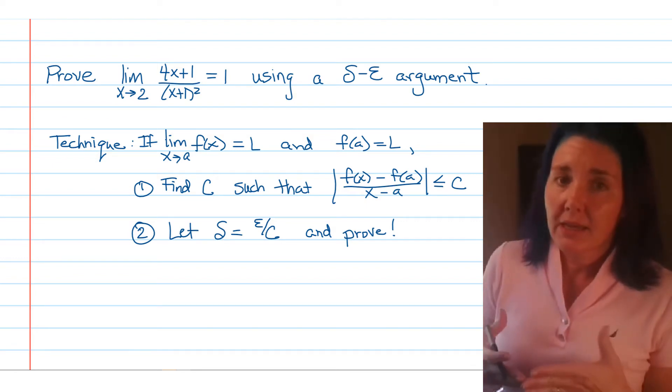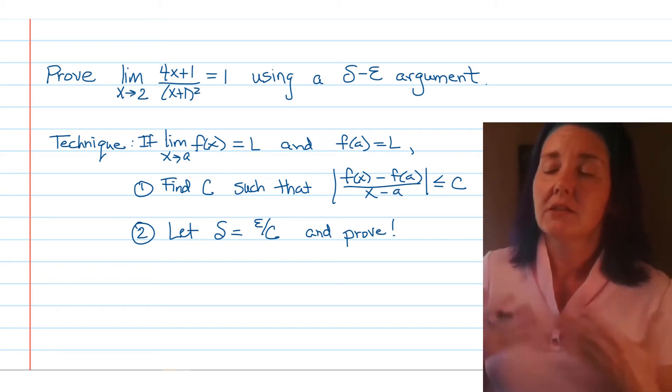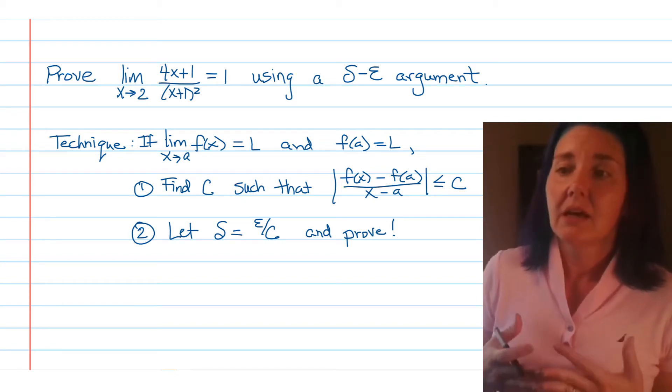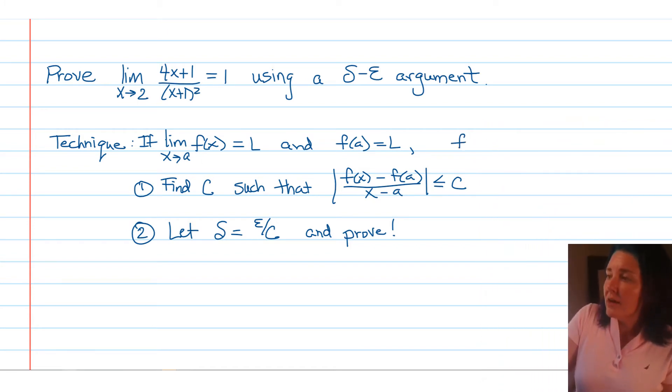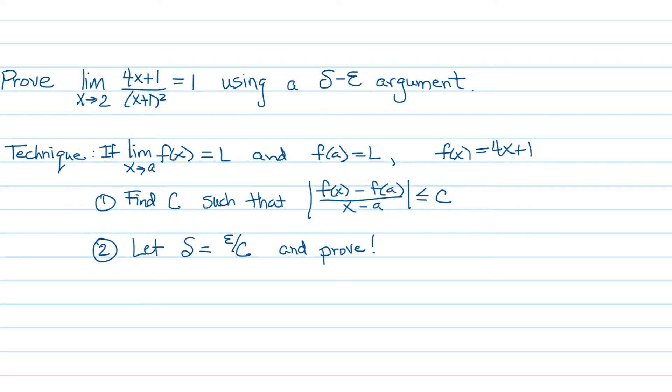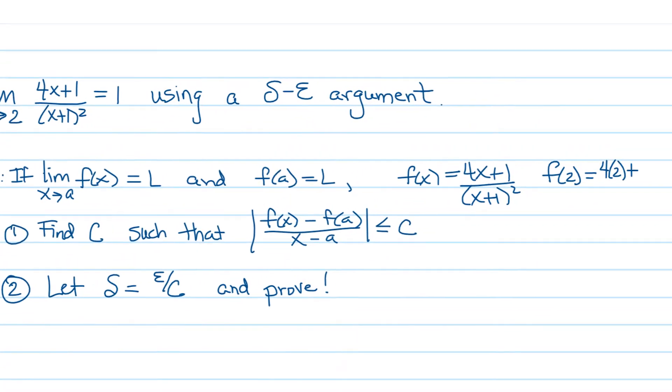In order to apply the technique, you need to observe that this particular limit could be calculated by plugging 2 into the function f(x). In this case, if f(x) = (4x+1)/(x+1)², then f(2) would be 4(2)+1 over (2+1)² which is 9/9 or 1.